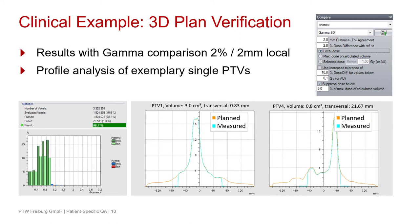I also want to mention that with VeriSoft you have many useful tools for your gamma analysis that each user can choose for themselves. For example, you can decide whether you want a two-dimensional or three-dimensional gamma analysis, local or global criteria, and you can also activate second and third pass criteria. Each physicist can decide which is the best evaluation criterion for their application.